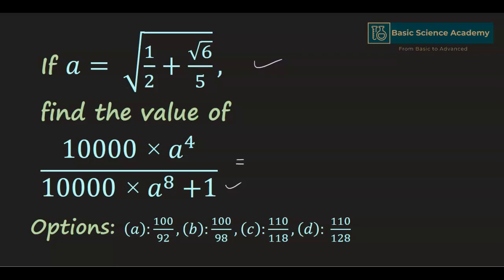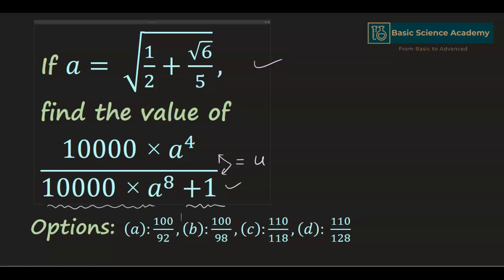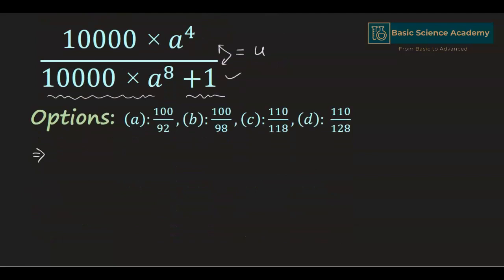Let's consider this expression equals u, and we have to find the value of u. We can simplify u by flipping this equation and separating the two terms, which gives us 1 divided by u equals 10,000 multiplied by a to the power of 8 plus 1, divided by 10,000 multiplied by a to the power of 4.